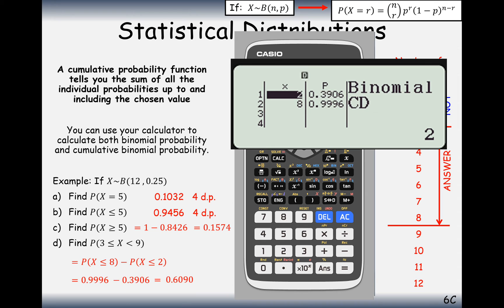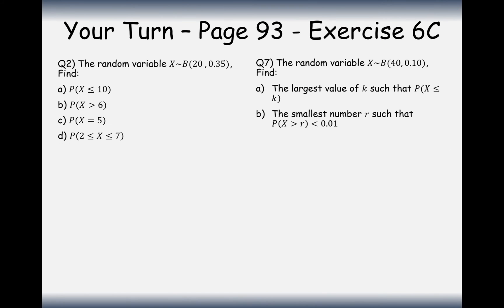So 0.6090 is the probability of getting a number of successes between 3 and 8 in this binomial model. Now it's your turn — get your calculator ready and try to let it do all the work for you. Pause the video and give it a go.